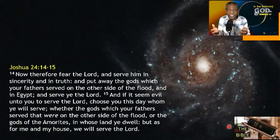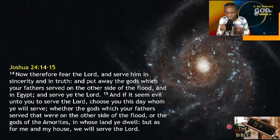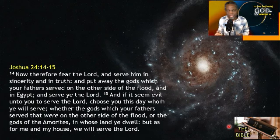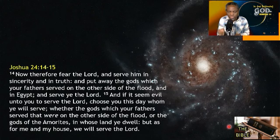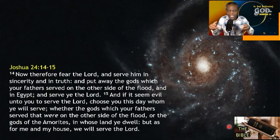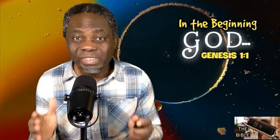Let's read Joshua chapter 24 verses 14 and 15. Joshua was recounting God's goodness after they had taken over the land, charging the people: Now therefore fear the Lord and serve him in sincerity and truth. Put away the gods your fathers served. If it seems evil to you to serve the Lord, choose you this day whom you will serve — whether the gods your fathers served or the gods of the Amorites. But as for me and my house, we will serve the Lord. You have to choose — your wife, husband, or parent cannot choose for you.